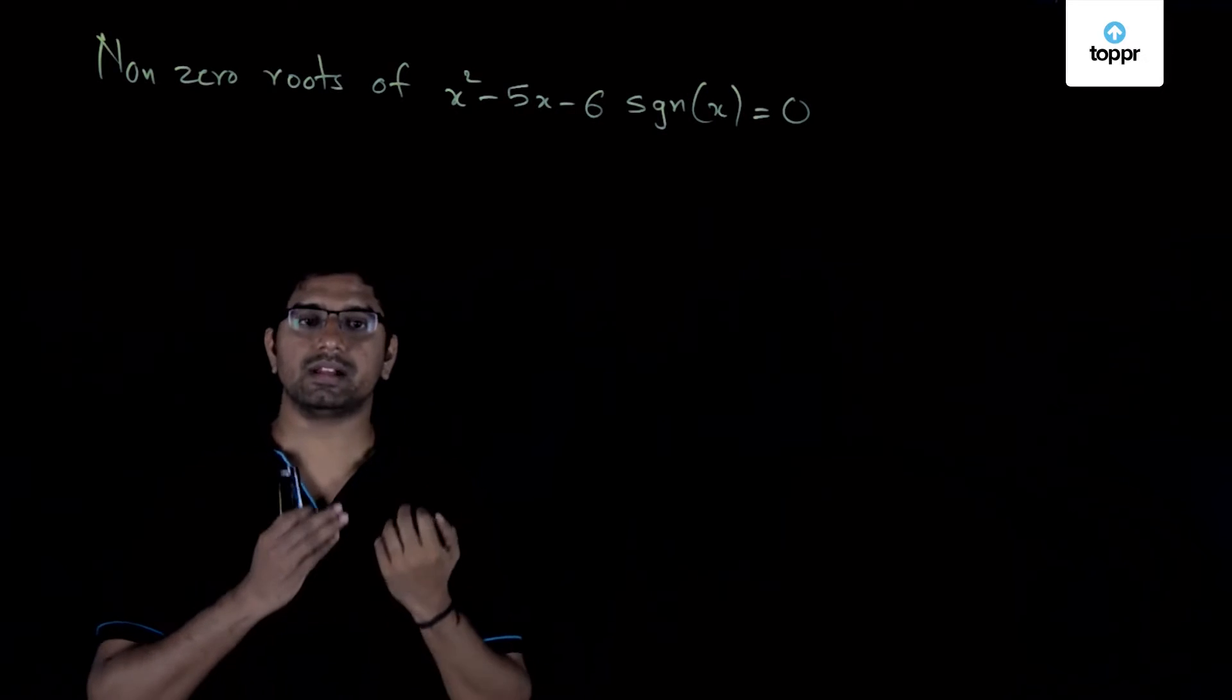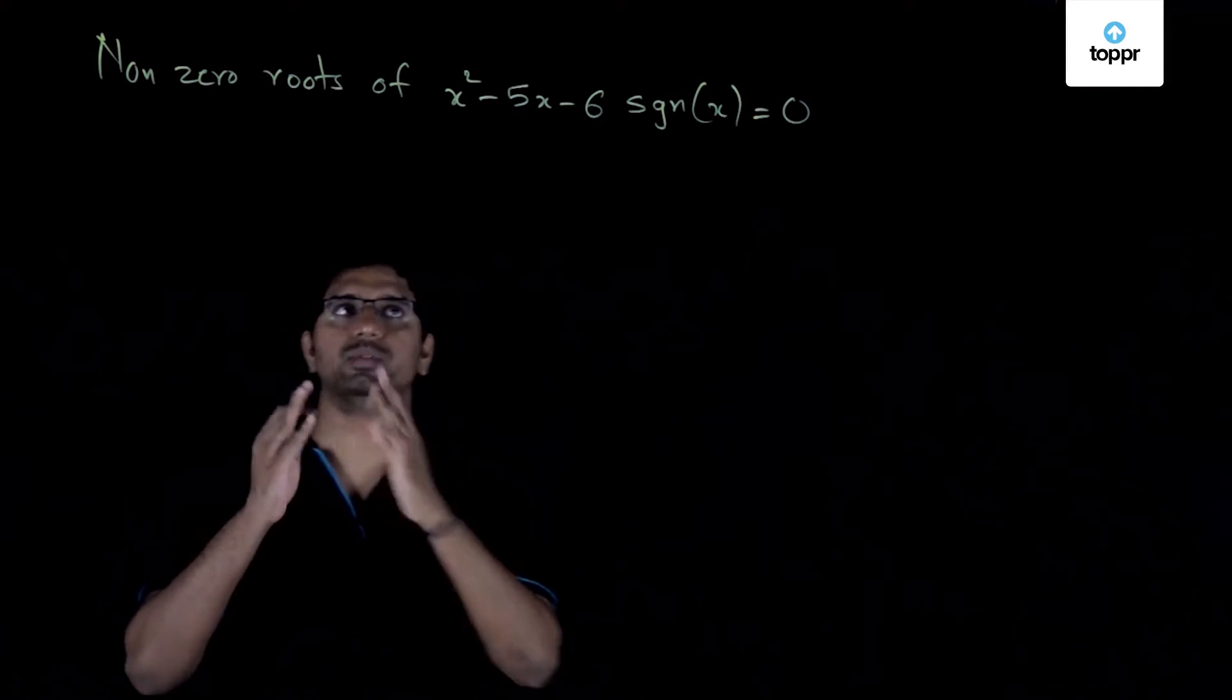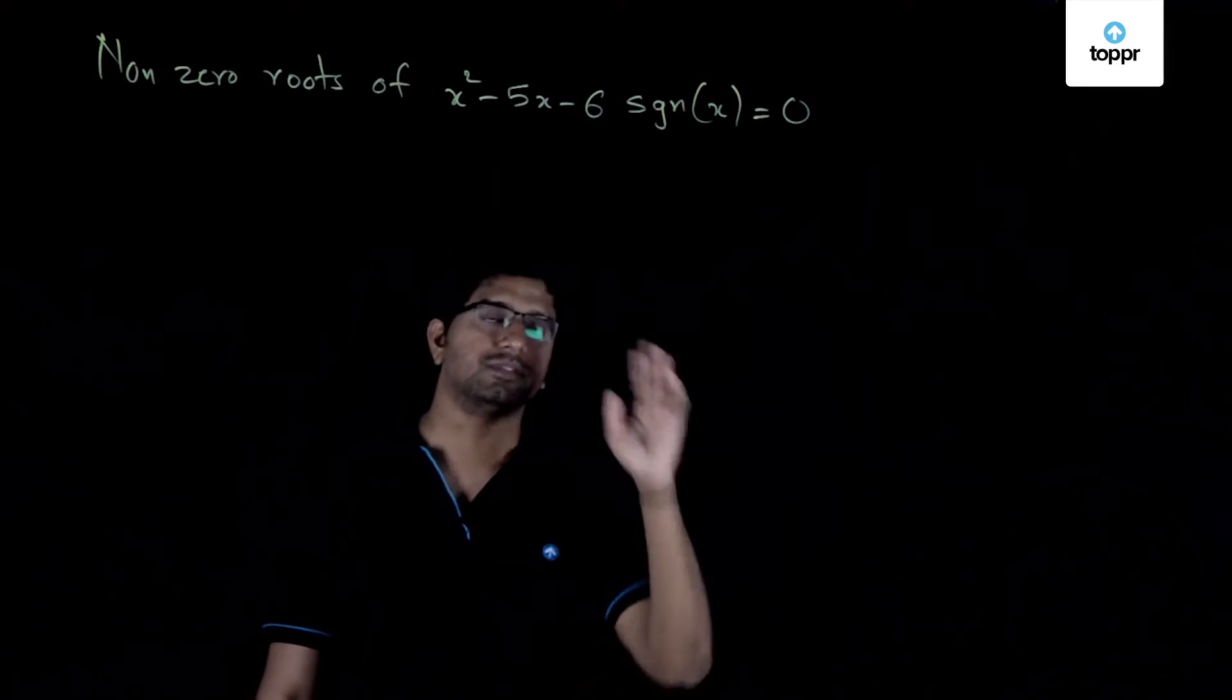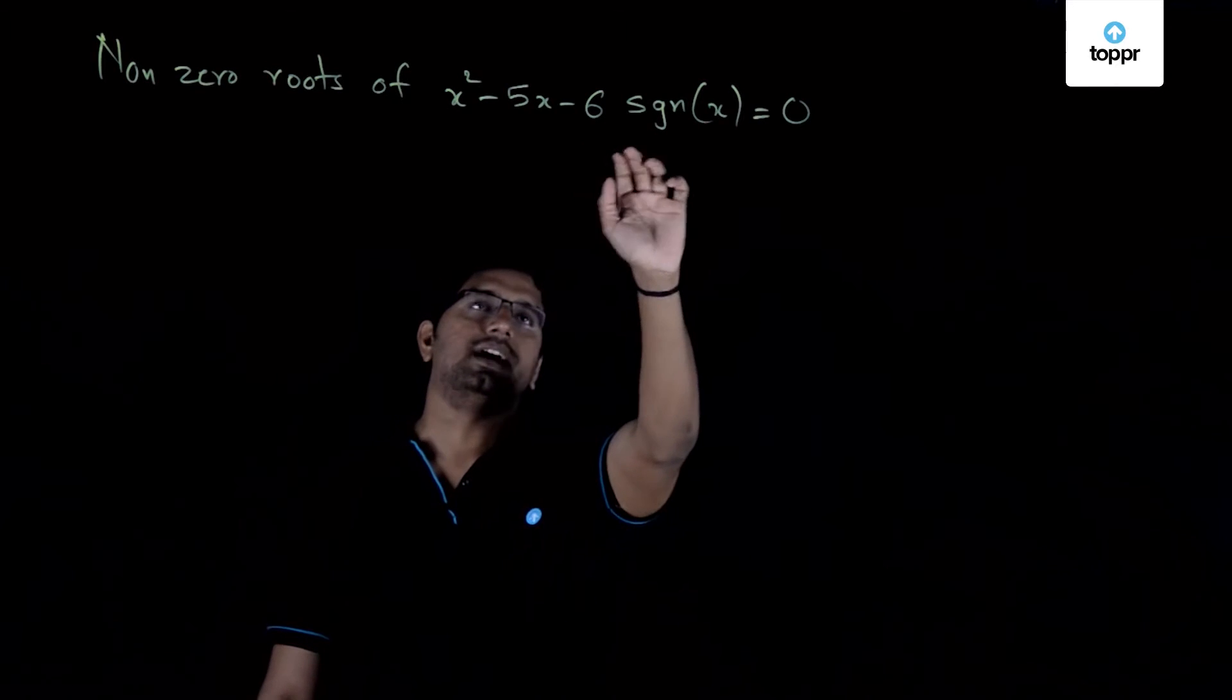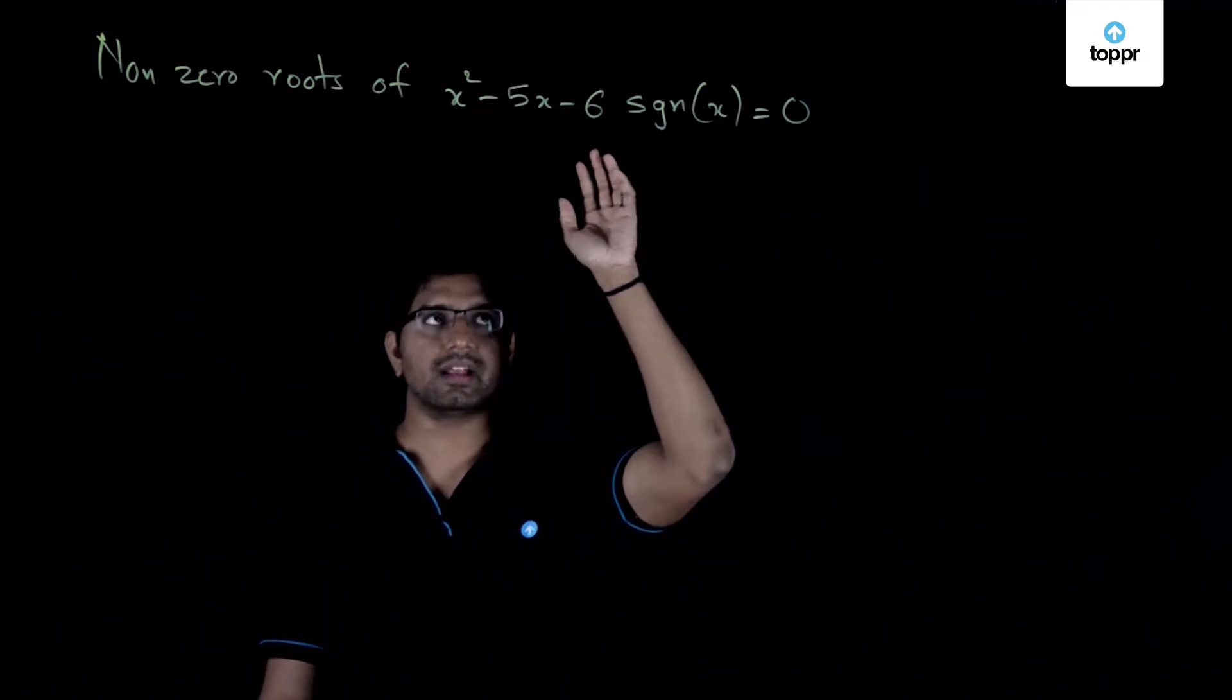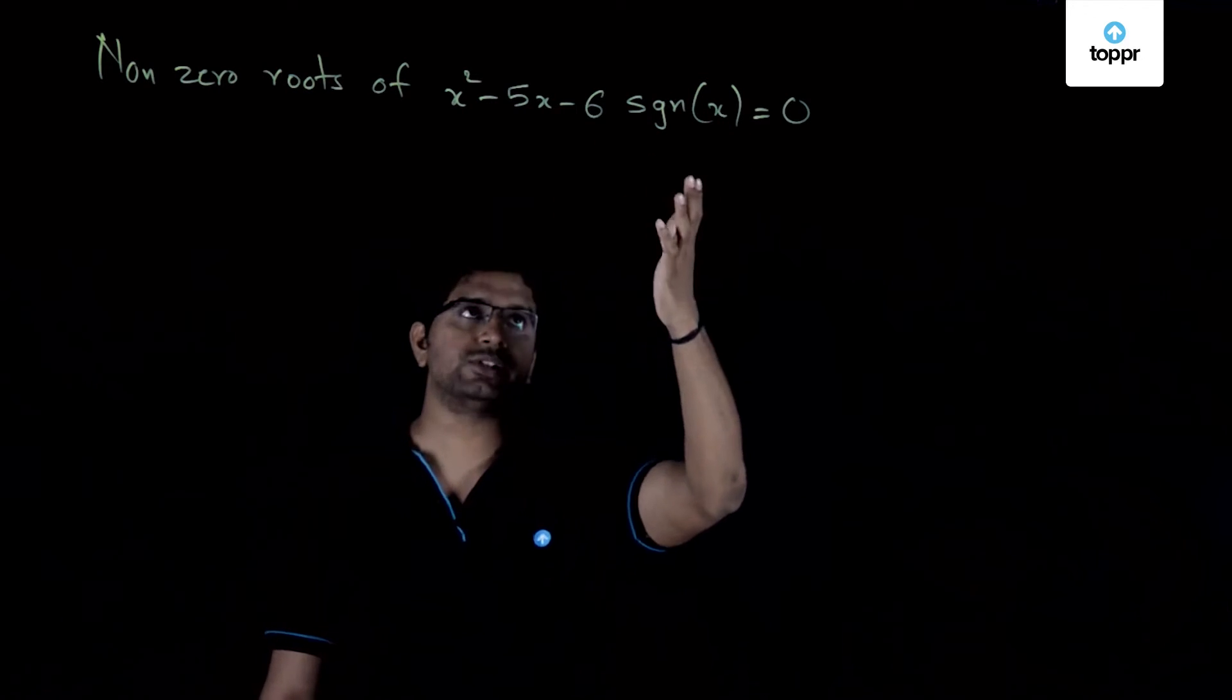This problem we need to evaluate the number of nonzero roots of this seemingly quadratic equation. The only difference is that the final constant term is not just a constant term, but it is rather a function called the signum function.